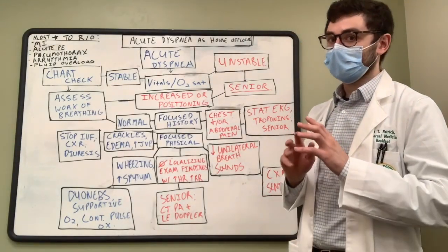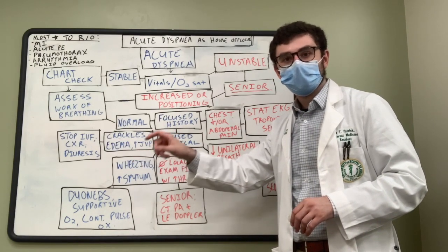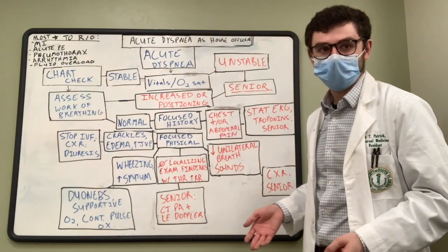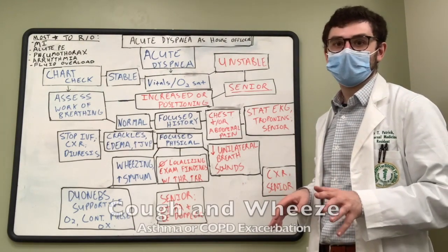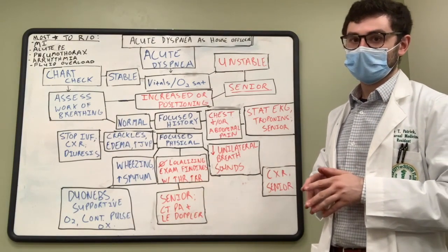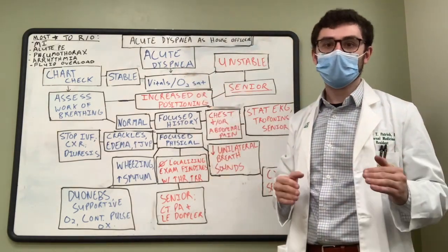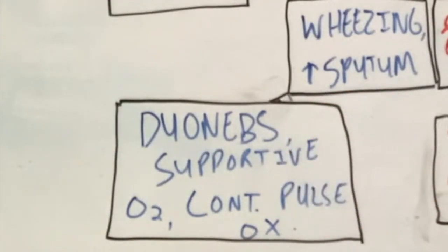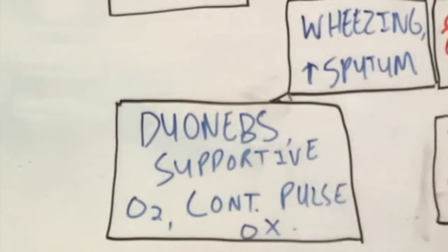If on your exam you notice wheezing — especially expiratory wheezing — along with a worsened or productive cough with yellow sputum, possibly a chronic cough that's now worsening, be concerned for an exacerbation of obstructive lung disease such as asthma or COPD. If the patient isn't already getting breathing treatments, try every-four-hour albuterol and ipratropium. Make sure they have supportive oxygen to keep saturations at least 90%, and place a continuous pulse oximeter.